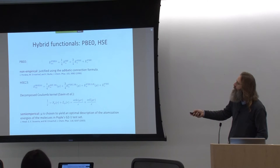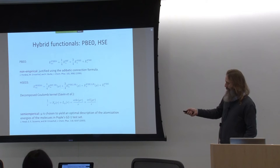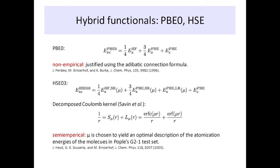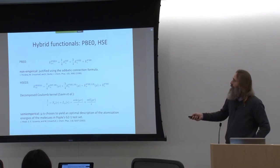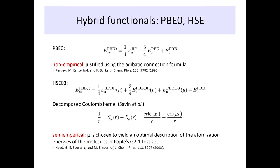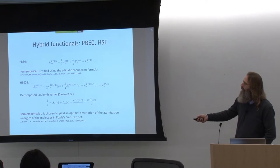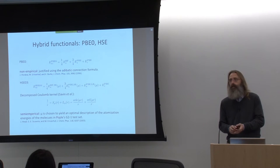Another very popular functional very much alike PBE0 is called HSE, or HSE03 or HSE06 — there are a few varieties. These are essentially a quarter of the short-range component of Fock exchange, three quarters of the short-range component of PBE exchange, the complete long-range component of PBE exchange, and PBE correlation. The 1/R operator in the exchange has been decomposed into a short-range part and a long-range part by means of an error function. The range at which this separation is done is controlled by a semi-empirical parameter fitted to atomization energies for a test set of molecules.